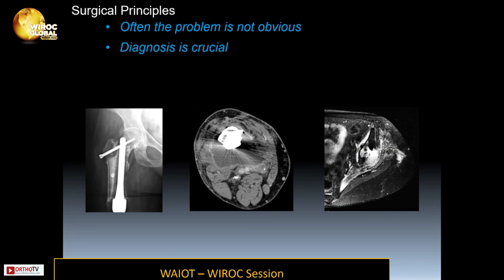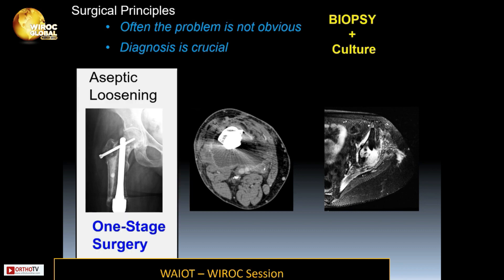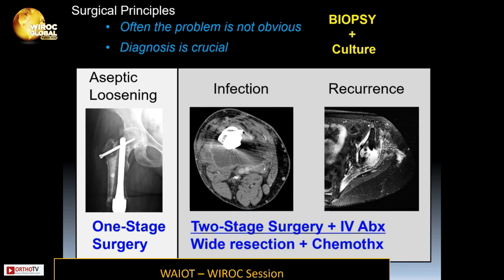The surgical principles must be maintained. Often the problem is not obvious, and diagnosis is crucial. A biopsy and culture are required because in aseptic loosening cases only a one-stage surgery is needed, whereas with infection or recurrent tumor, a two-stage surgery, IV antibiotics, wide resection, and possibly chemotherapy are required.